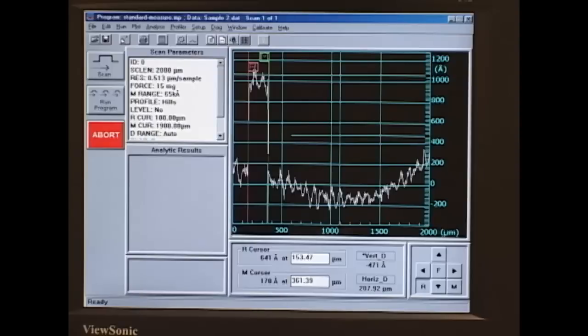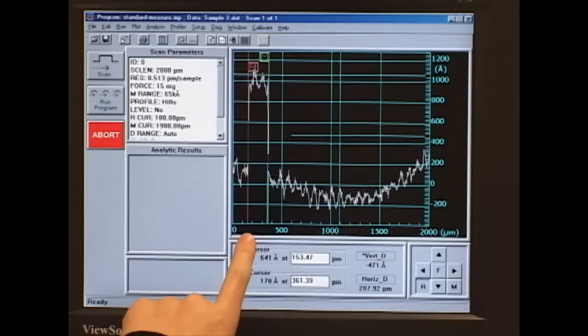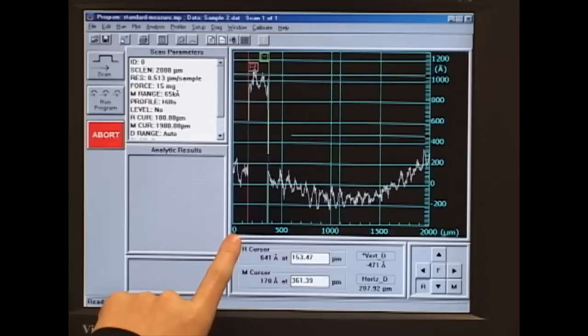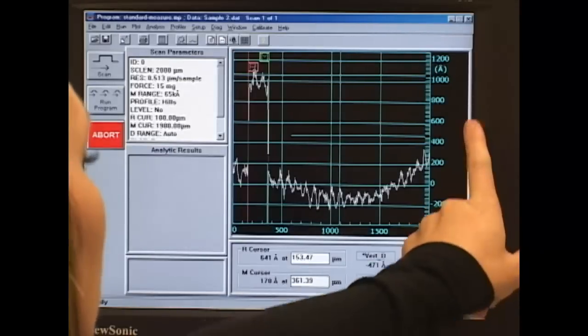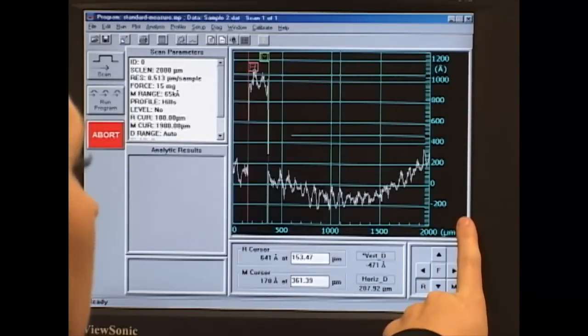So something to note about this instrument, it measures very small features. So while you have a scale of microns that goes in the horizontal direction of your sample, the vertical direction of your sample will be on the scale of angstroms.